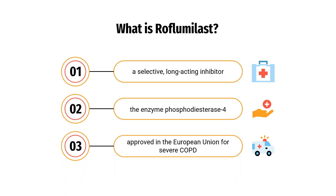Roflomilast, sold under the trade name DAXES among others, is a drug that acts as a selective, long-acting inhibitor of the enzyme phosphodiesterase 4. In June 2010, it was approved in the European Union for severe COPD associated with chronic bronchitis. In February 2011, it gained FDA approval in the United States for reducing COPD exacerbations. It is available as a generic medication.